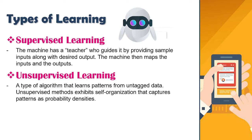Next is unsupervised learning. It is a type of algorithm that learns patterns from unlabeled data. Unsupervised methods exhibit self-organization that captures patterns as probability densities. In unsupervised learning, you only have input data and no corresponding output variables. The goal is to model the underlying structure or distribution in the data in order to learn more about the data. These are called unsupervised learning because, unlike supervised learning, there are no correct answers and there is no teacher. Algorithms are left to their own devices to discover and present the interesting structures in the data.